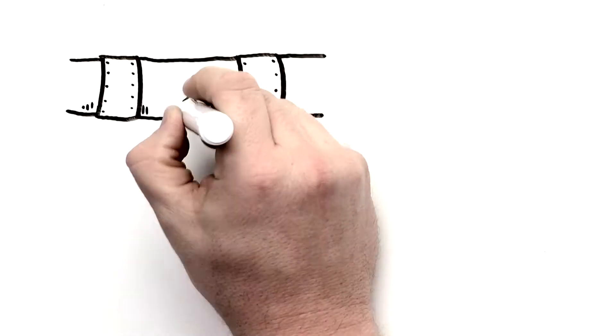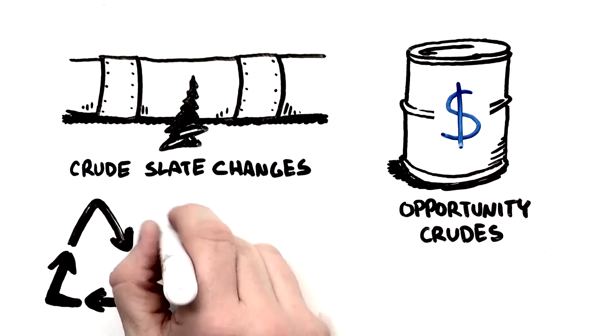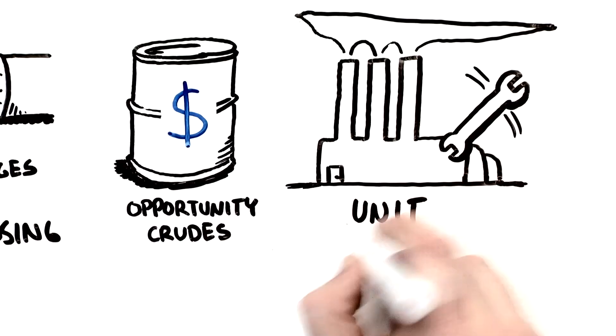It is not always easy to predict these events with crude slate changes, opportunity crudes, reprocessing slops, unit upsets, etc.